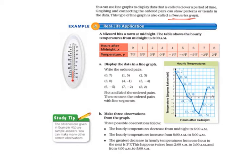Example 4 is a real-life application. A blizzard hits a town at midnight. The table shows the hourly temperatures from midnight to 8 a.m. So we need to look at our table. It shows hours after midnight, which is going to be shown on the x-axis, and the temperature, which is going to be shown on the y-axis. So letter A, we display the data in a line graph, and we write the ordered pairs. So we write everything as an ordered pair. So the x is 0, and the y is 7 for our first ordered pair, and 1 and 5 for our second, 2 and 3 for our third, and so on. Plot and label the ordered pairs, and then connect the ordered pairs with line segments.